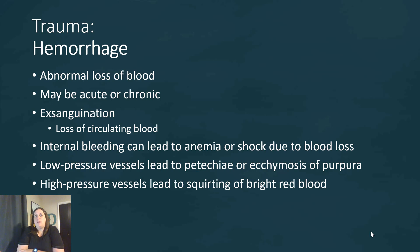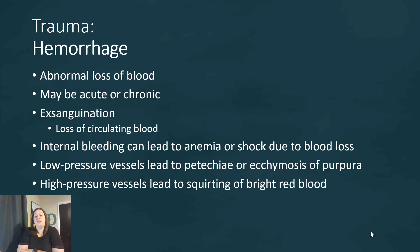When discussing trauma to the cardiovascular system, the biggest concern is hemorrhaging — an abnormal loss of blood. Acute hemorrhage involves losing large amounts of blood very quickly, while chronic hemorrhage involves losing a significant amount over an extended period of time. Exsanguination refers to the loss of circulating blood.